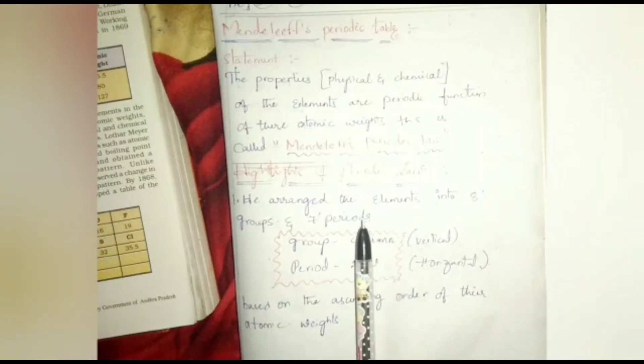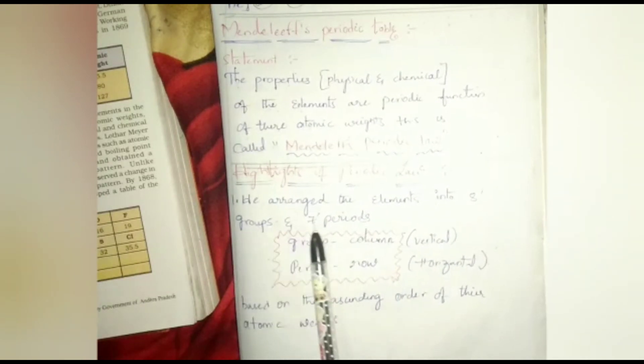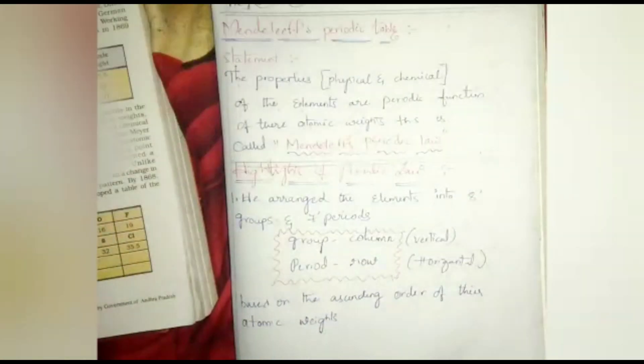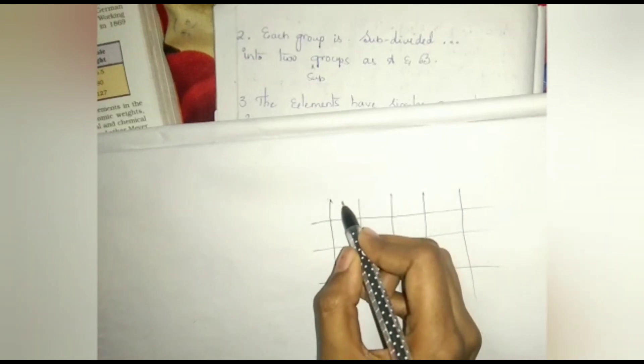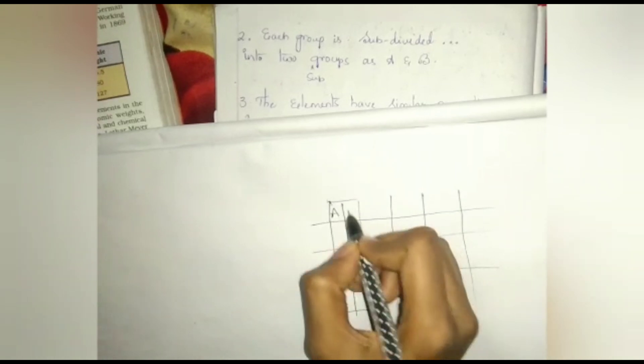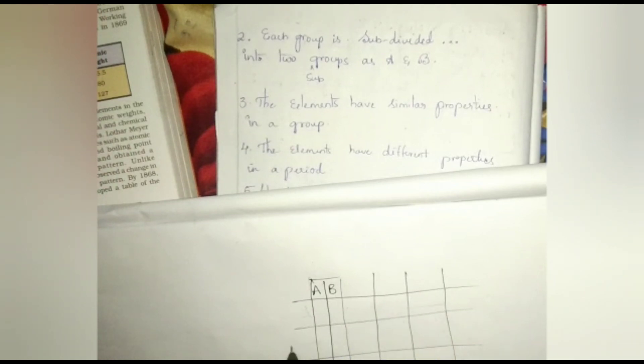The highlights of Mendeleev's periodic law: he arranged elements into eight groups and seven periods. Groups are vertical columns and periods are horizontal rows, arranged in ascending order of atomic weights. Each group is subdivided into A and B subgroups. Elements of similar properties are placed in the same group, while elements of different properties appear across a period.